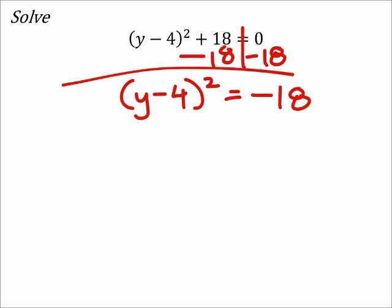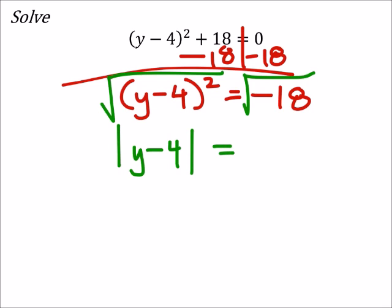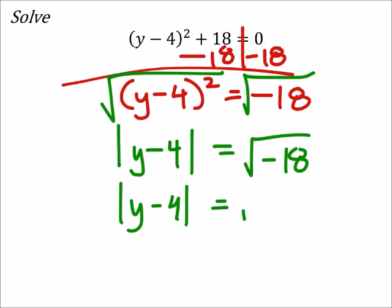See, now at this point if I square root both sides, which is what I'm doing, then I get rid of that square, but now it gives me an absolute value. And it's going to equal the square root of negative 18. But I'm going to change that real quick - that's i times the square root of 18, and we'll simplify the square root of 18 later because we can.